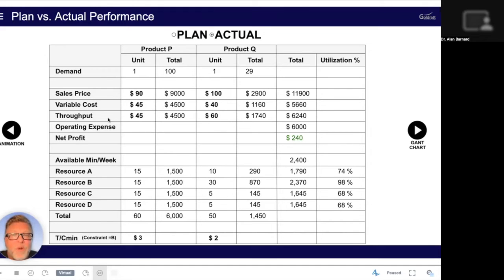So let's look at that. P gives me a $45 throughput or gross margin. It requires 15 minutes on the bottleneck. So it's actually $3 per minute that I'm getting every time I produce P. I have a higher gross margin or throughput on Q, which is $60, but it takes me 30 minutes on the bottleneck. So that's only $2 per minute. Makes it very easy. Of course, I want $3 a minute and not $2 a minute.